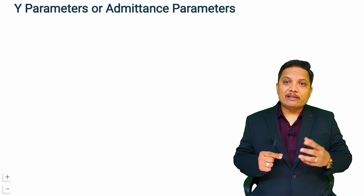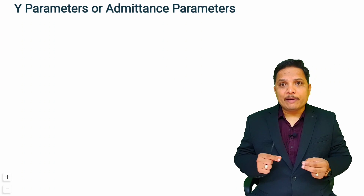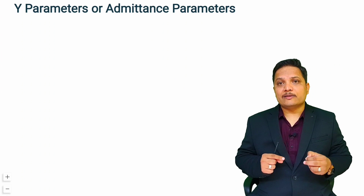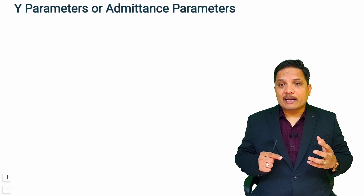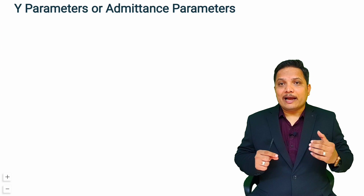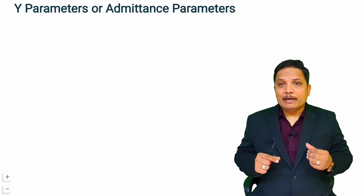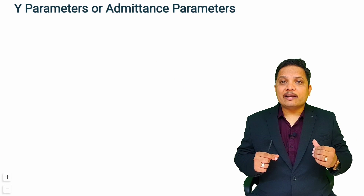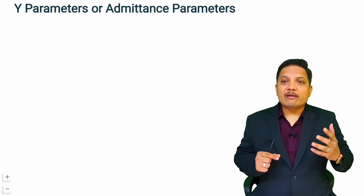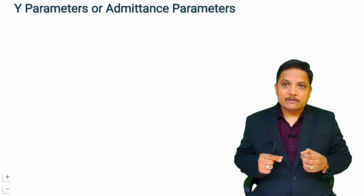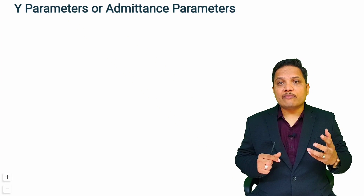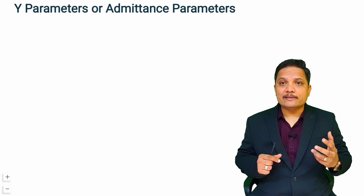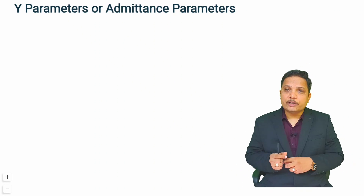When we talk about Y parameter, that is the admittance parameter. Admittance means the ratio of current divided by voltage. So the relation of admittance is current divided by voltage.